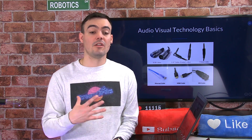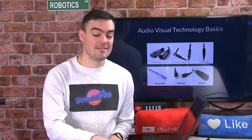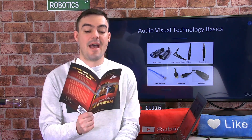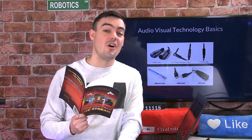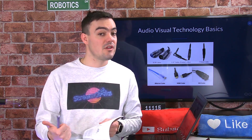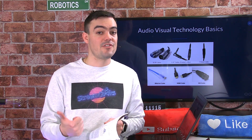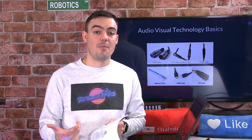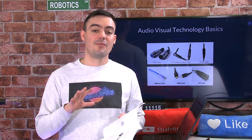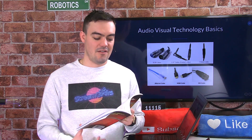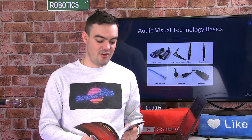We're going to talk more in a secondary chapter about tuning your audiovisual system — that means tuning your camera's color correction and tuning the audio mixer. Right now we're just going to talk about the basics of audio and video.